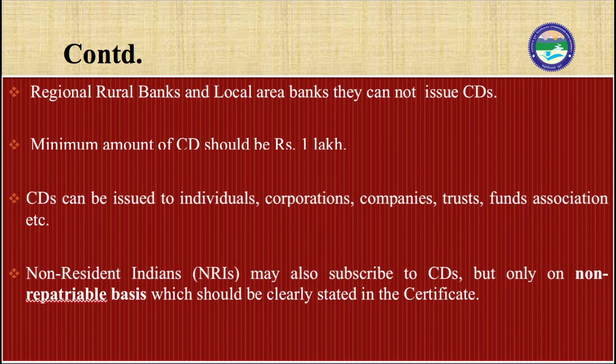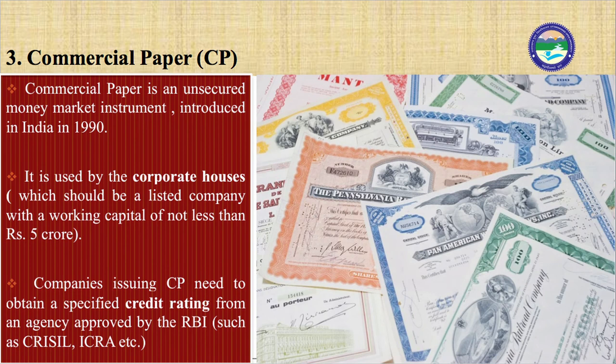Commercial paper is an unsecured money market instrument introduced in India in 1990. It is used by corporate houses that are listed companies with a working capital of not less than rupees 5 crore. Companies issuing commercial paper need to obtain a specified credit rating from an agency approved by RBI, such as CRISIL or ICRA. A credit rating is an assessment of the creditworthiness of a borrower — that is, whether the borrower is financially capable of repaying.